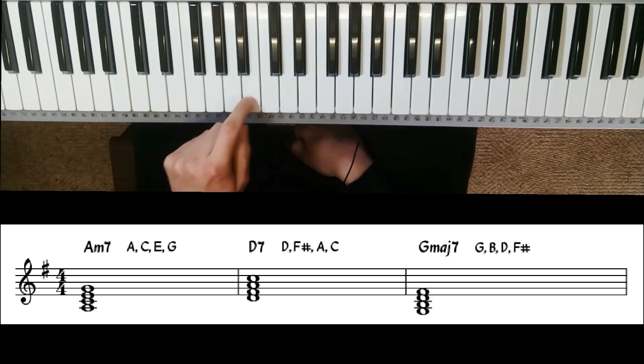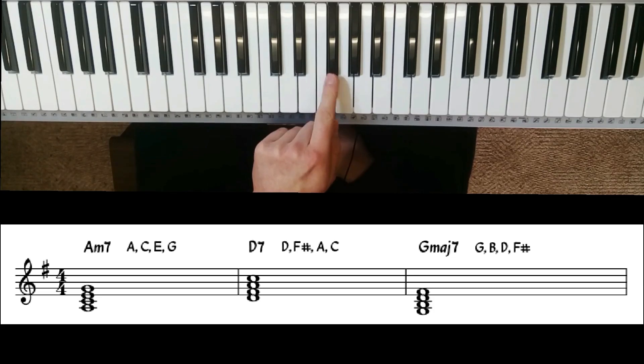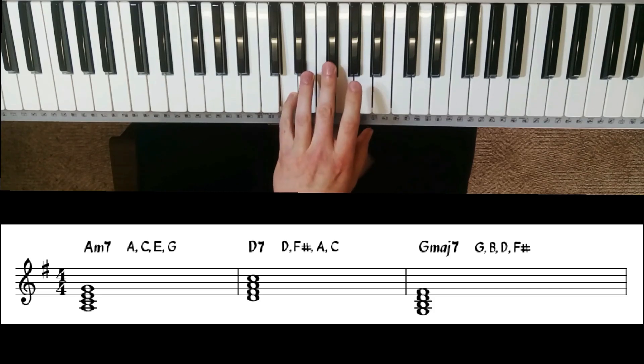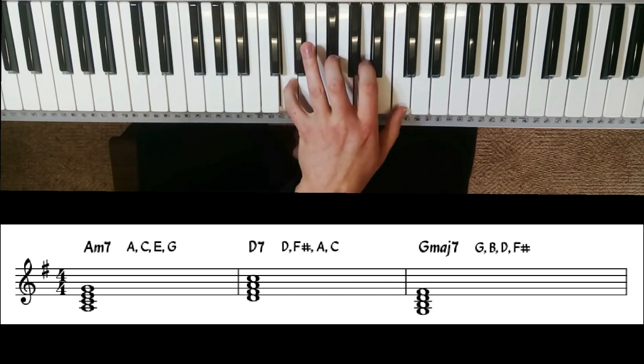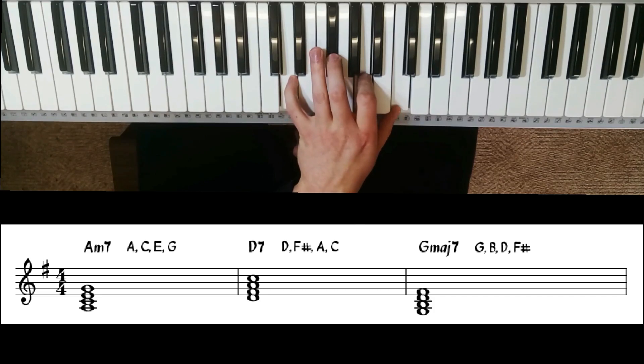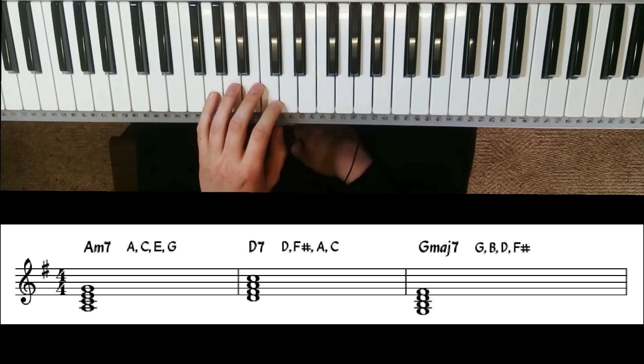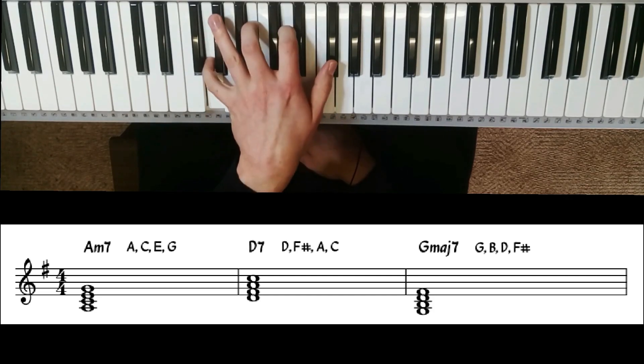For our 5 chord—1, 2, 3, 4, 5—that's D7. We have to pay attention to the F sharp. So D, past E, don't play F, we're in the key of G, play F sharp, A, and C. That's our 5 chord. And our 1 chord: G, B, D, not F—F sharp.